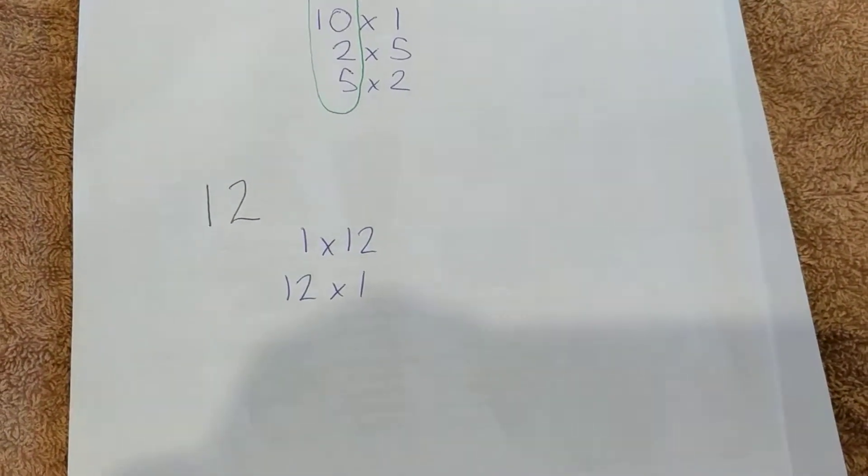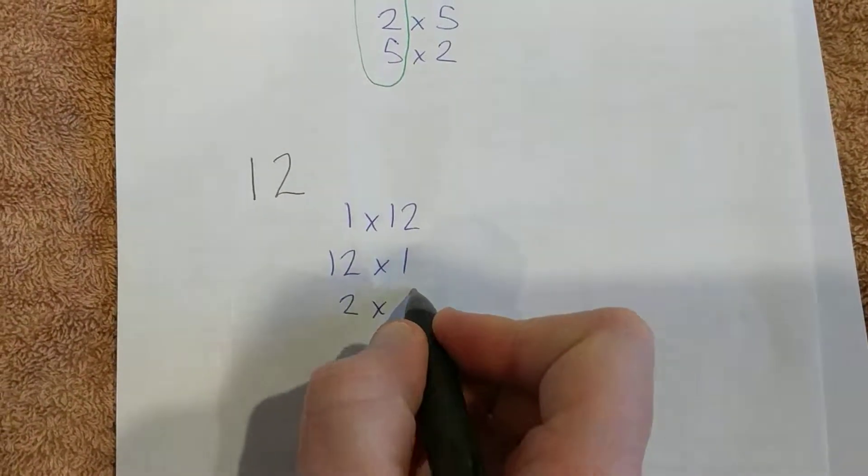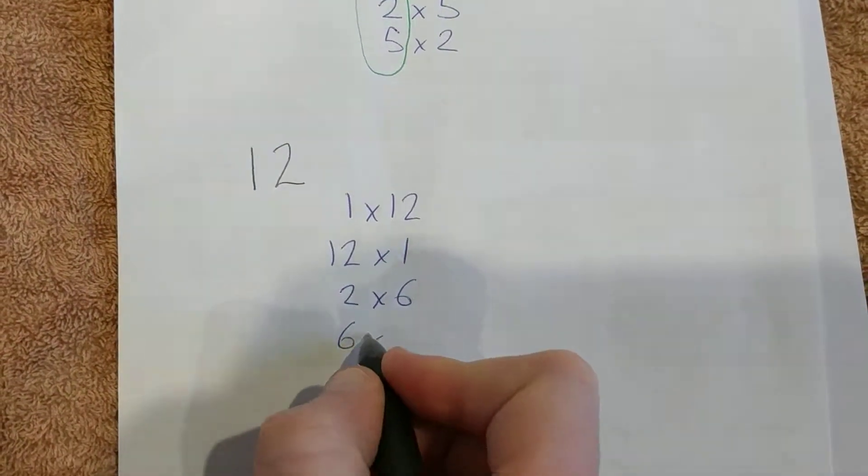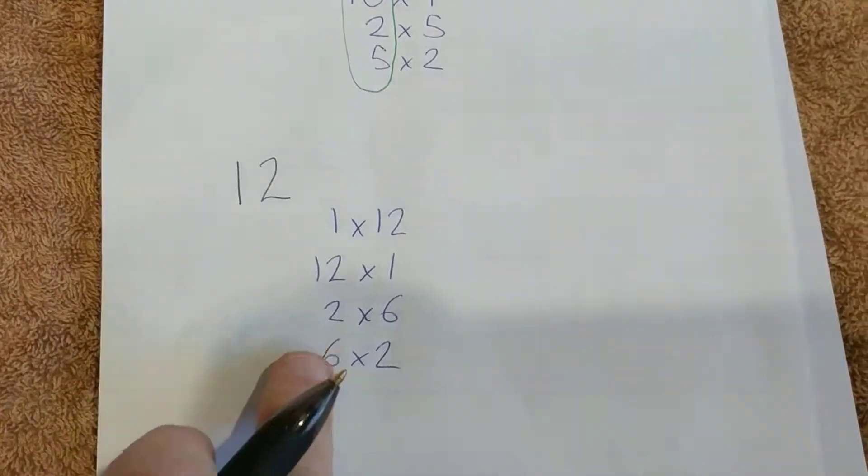2 is a factor - it goes into 12 evenly. 2 goes into 12 six times, therefore 6 is a factor. Goes in 2 times. We've found 4 already.